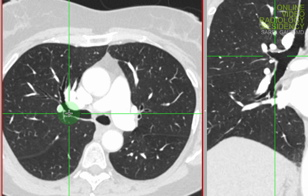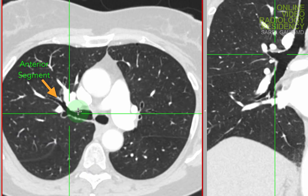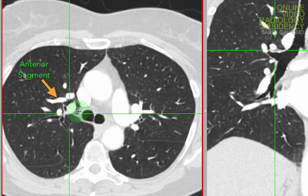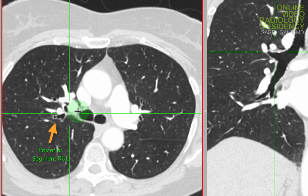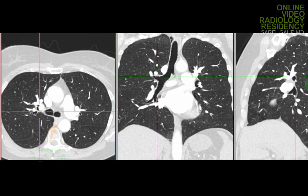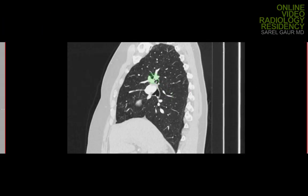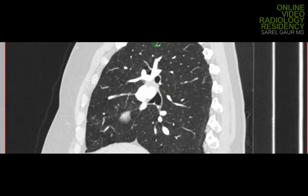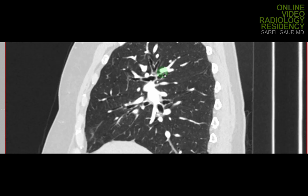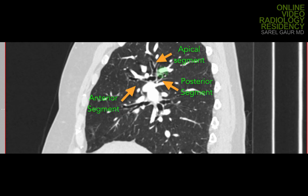At this level here, you can see the anterior segment. And if I scroll up a little, you can see the posterior segment there. And if I look on the sagittal imaging, you can see very nicely the branching of the apical, anterior, and posterior bronchial segments.